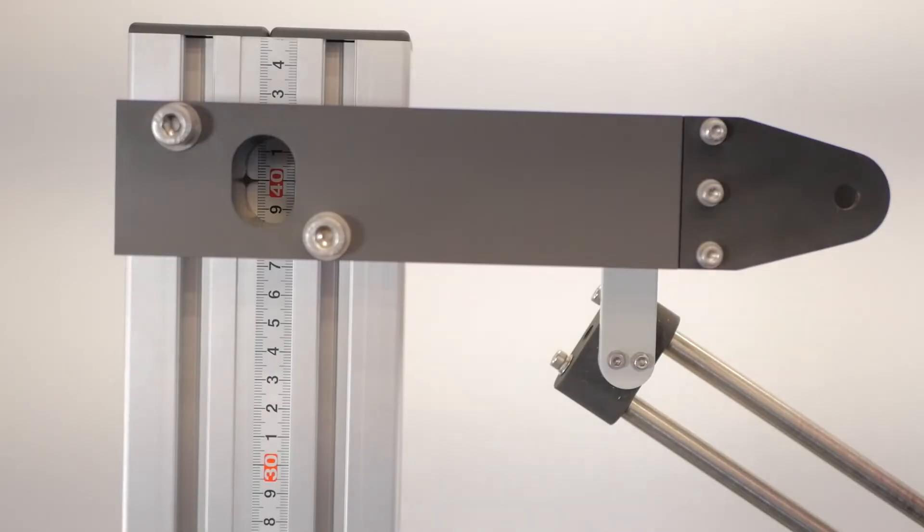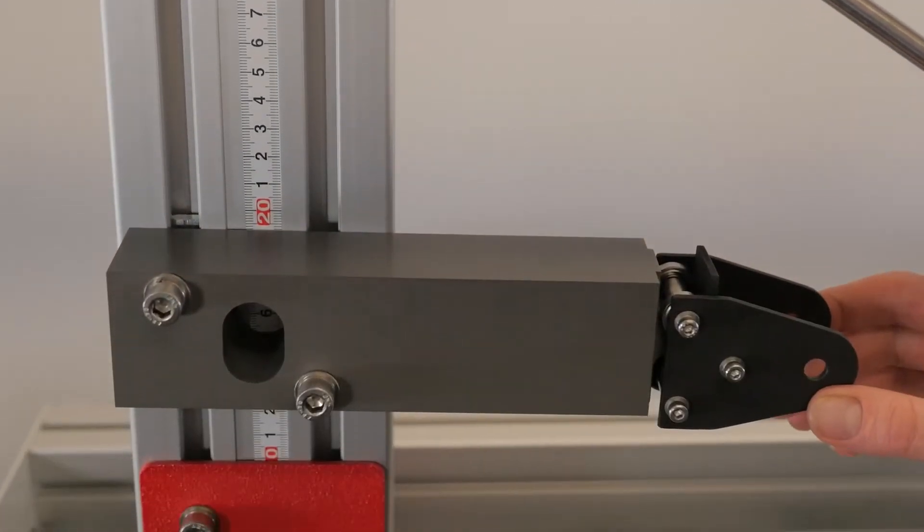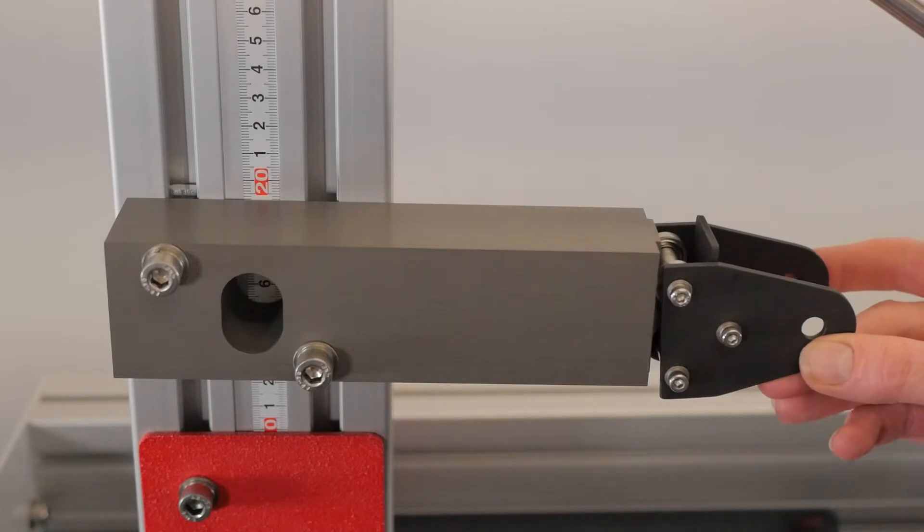The support at the top here is pinned and only allows rotation. The support at the bottom is on a roller and allows the truss to rotate and translation to occur.